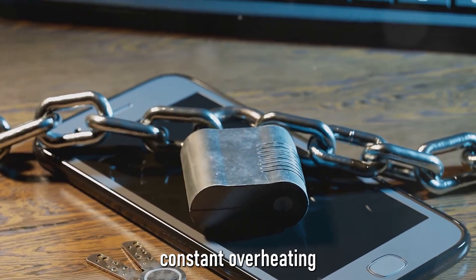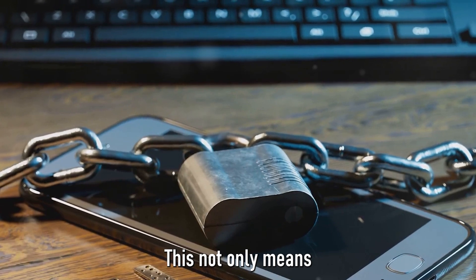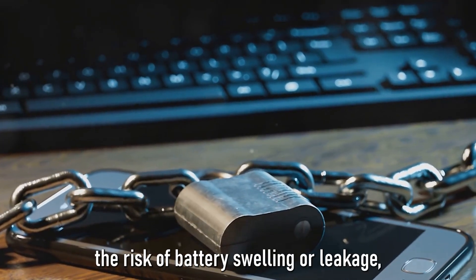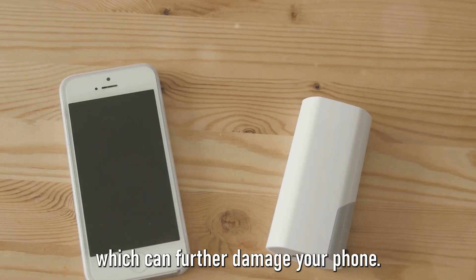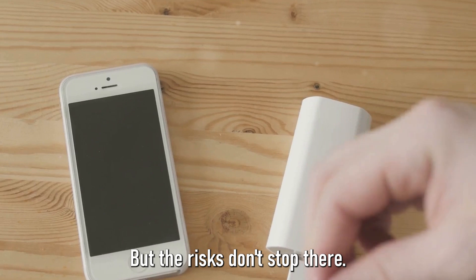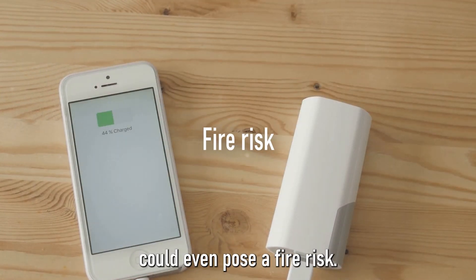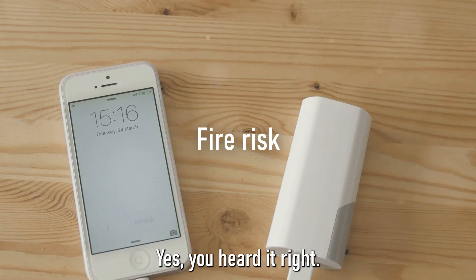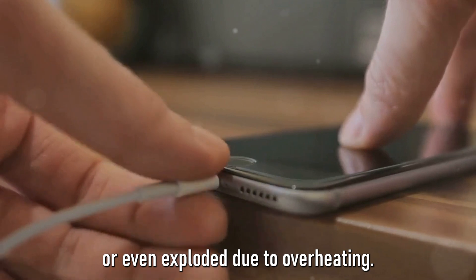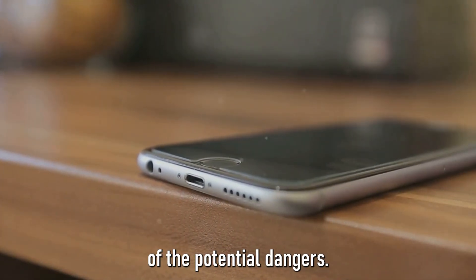Over time, constant overheating can degrade your battery's health, reducing its lifespan. This not only means that you'll find yourself reaching for your charger more often, but it also increases the risk of battery swelling or leakage, which can further damage your phone. But the risks don't stop there. In extreme cases, using your phone while it's charging could even pose a fire risk. Yes, you heard it right. There have been instances where phones have caught fire or even exploded due to overheating. This is obviously a rare occurrence, but it's a stark reminder of the potential dangers.